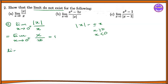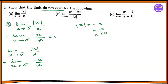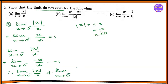The right-hand limit equals 1. For the left-hand limit: limit as x tends to 0 minus of modulus of x divided by x. When x is less than 0, modulus of x equals minus x, so minus x divided by x equals minus 1. Therefore the left-hand limit equals minus 1.